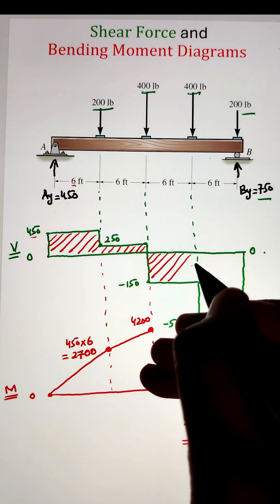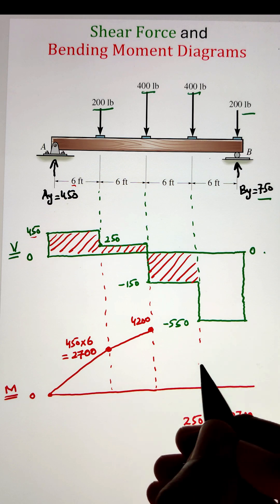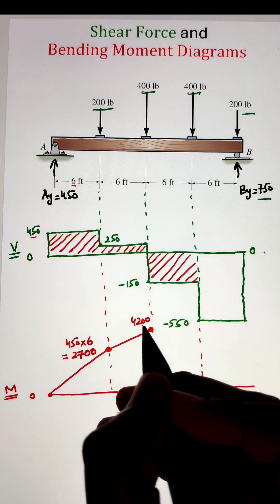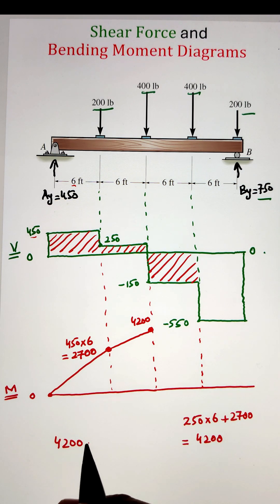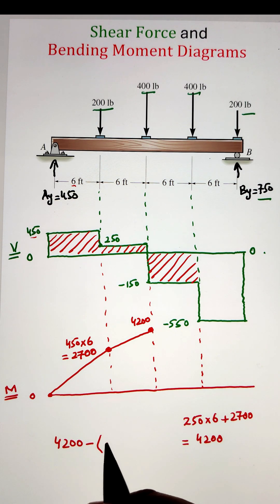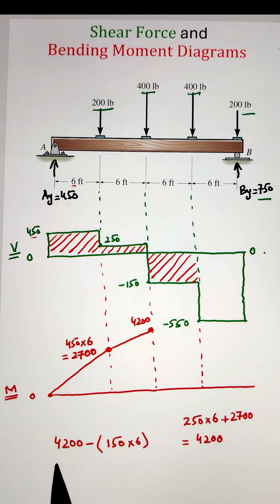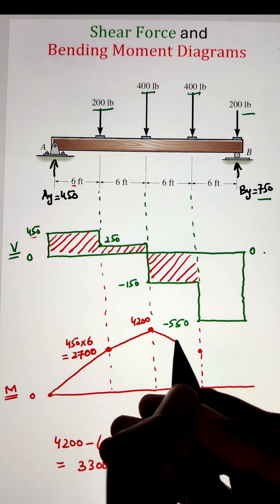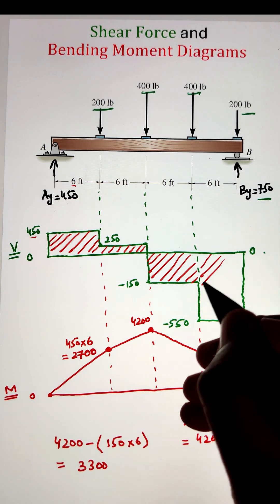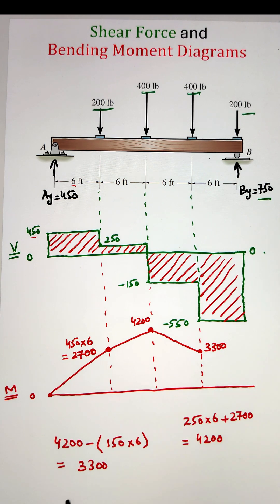Similarly, we have now an area in the negative zone of 150 times 6. So we have to subtract from 4200 the 120 times 6 and it gives us 3300. Finally, in the last section, we have to subtract again 550 times 6 from 3300 and it gives us the value of 0.